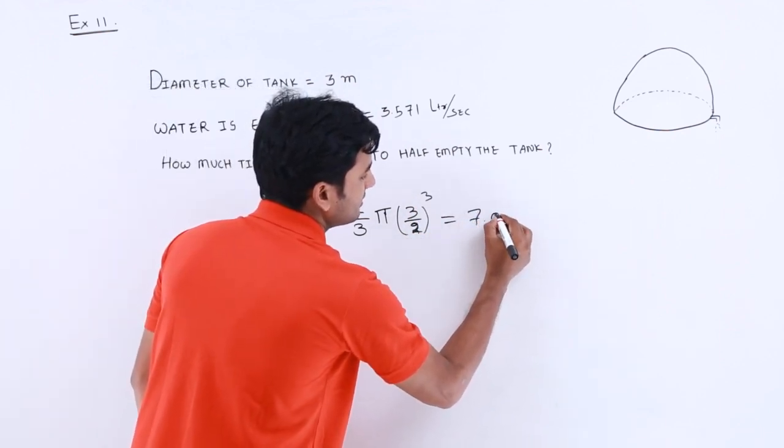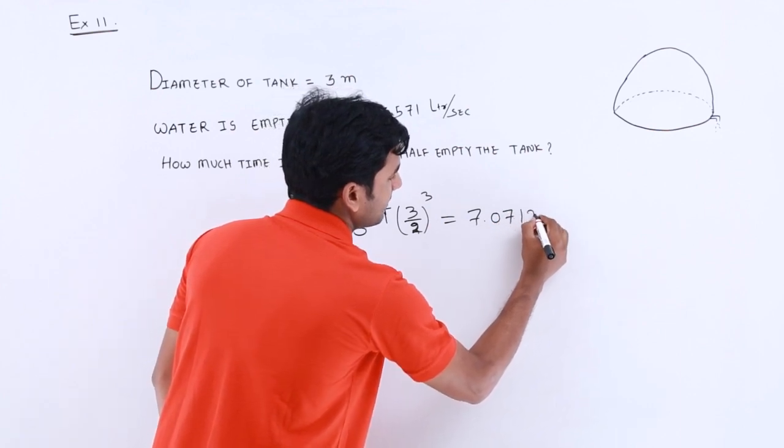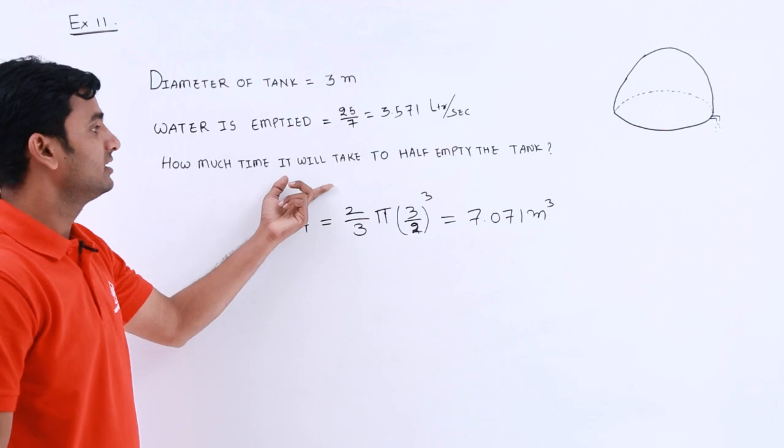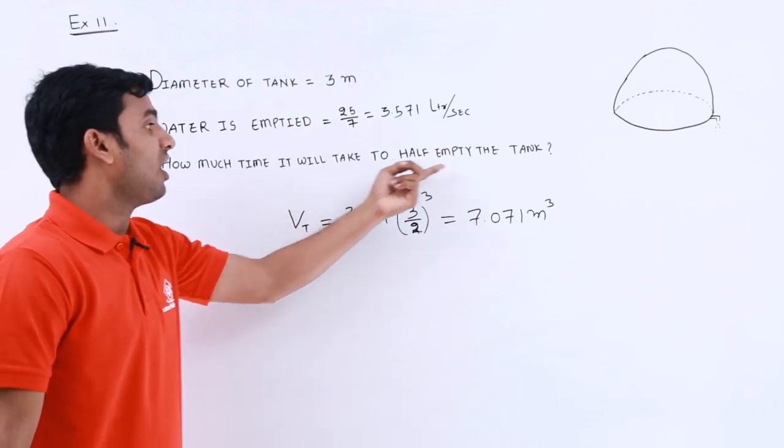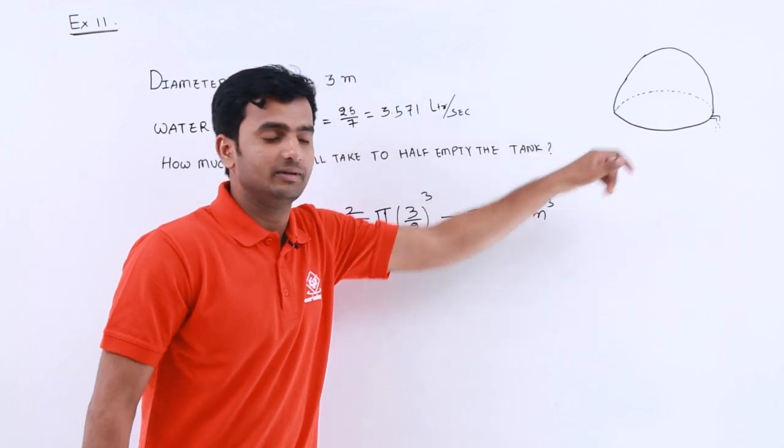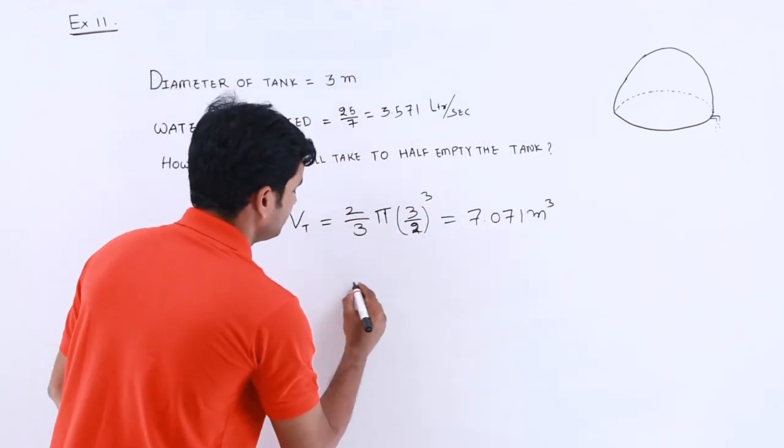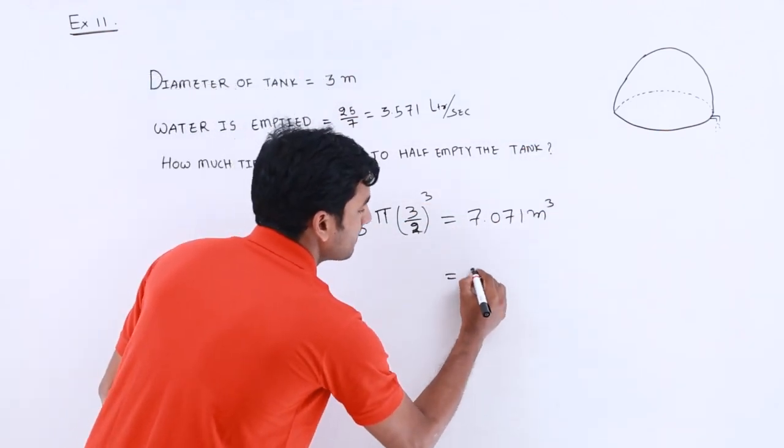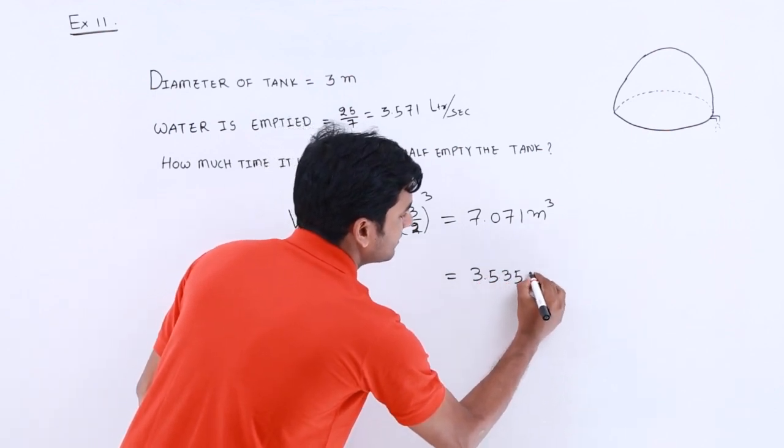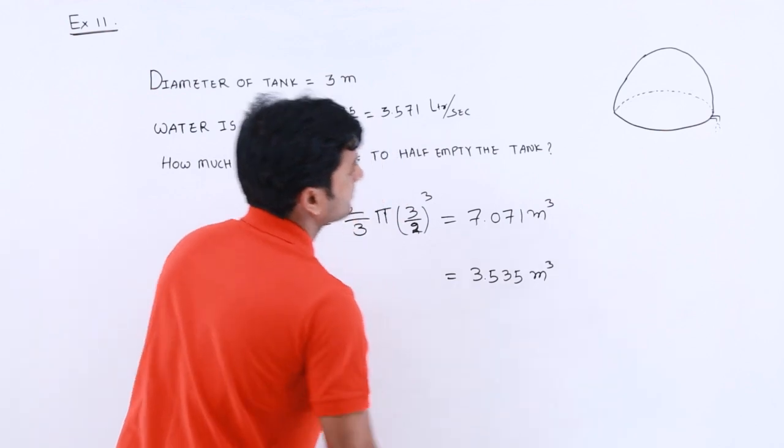So the volume will be 7.071 meter cube. But here we have to find out the time it will take to half empty the tank, so we have to half empty the tank only. So half of this volume will be 3.535 meter cube.